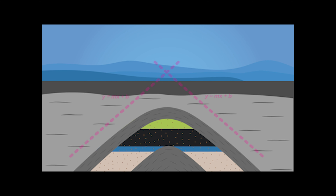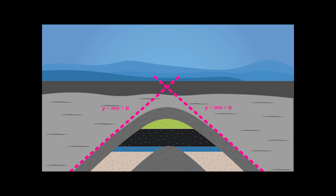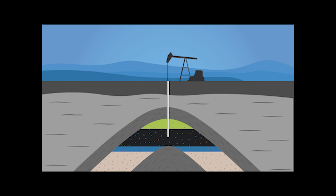The limbs of an anticline can be represented by two linear equations, which help Earth scientists identify the best location for drilling a well, which is typically through the top of the anticline.